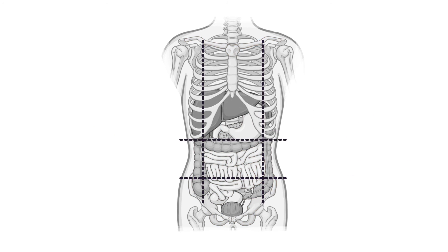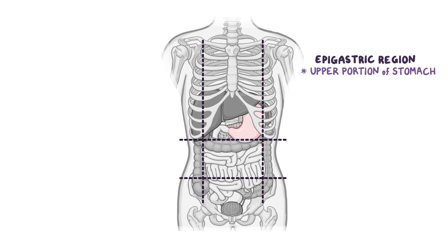So to wrap up, let's see where the abdominal or abdominopelvic organs can be found in relation to these nine regions, beginning with the middle three regions from top to bottom. At the top, you have the epigastric region, which, as the name suggests, mainly contains the upper portion of the stomach. Parts of the esophagus, liver, pancreas, duodenum, and spleen can also be found here.